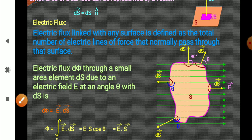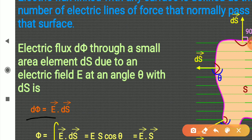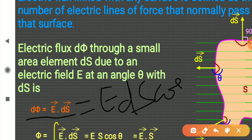Mathematically, it is shown by this relation: d-phi is equal to E dot ds. The symbol for electric flux is phi, and it is a scalar product of electric field and ds. Its value is E ds cos theta, where theta is the angle between electric field and the area vector.